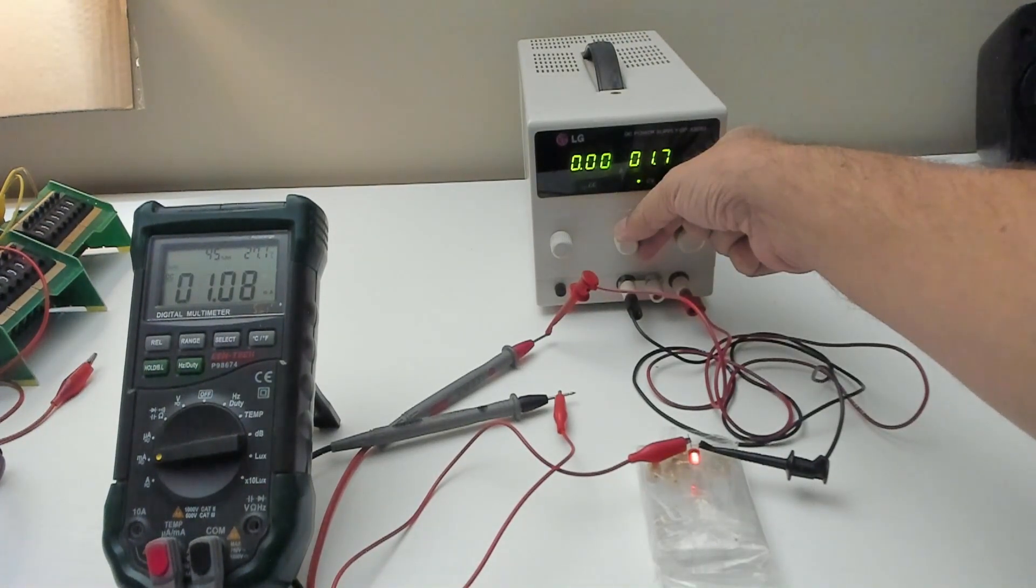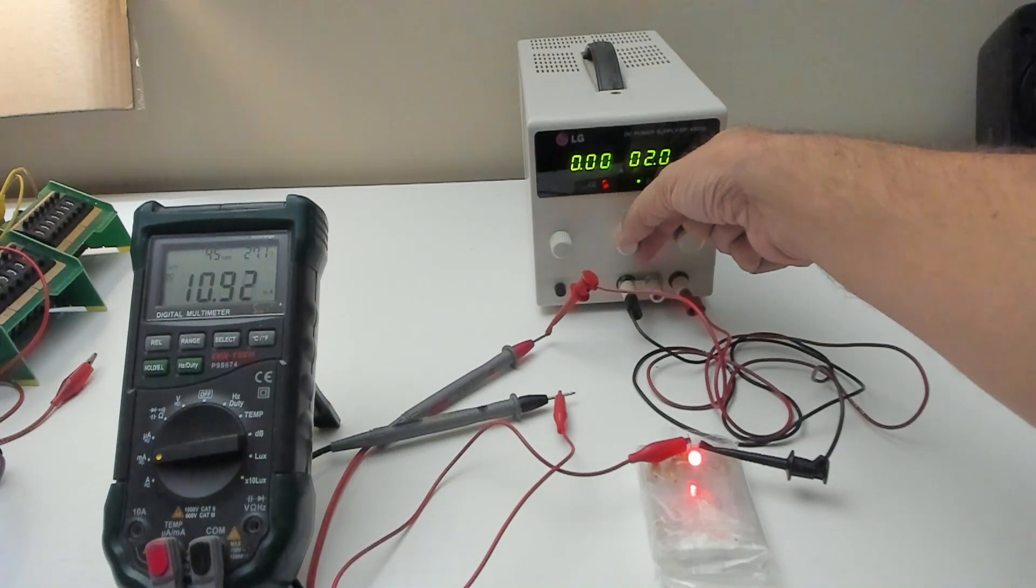Okay, I'm going to turn up the voltage. I'm at 1.7 and we're at 2 milliamps. I'm at 1.8 and we're at 4.5. I'm at 1.9 and we're at 6 milliamps. I'm at 2 volts and we're already at 10 milliamps.